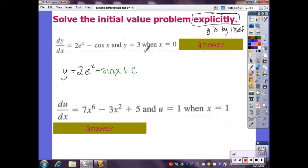So plugging in 3 for y and 0 for x would give us this: 3 equals 2 times e to the 0 minus sine of 0 plus c. And e to the 0 is 1, so if I simplify, 2 times 1 is just 2, and then sine of 0 is 0, so I don't have to write anything there, and then just bring down the plus c. So that means that c equals 1.